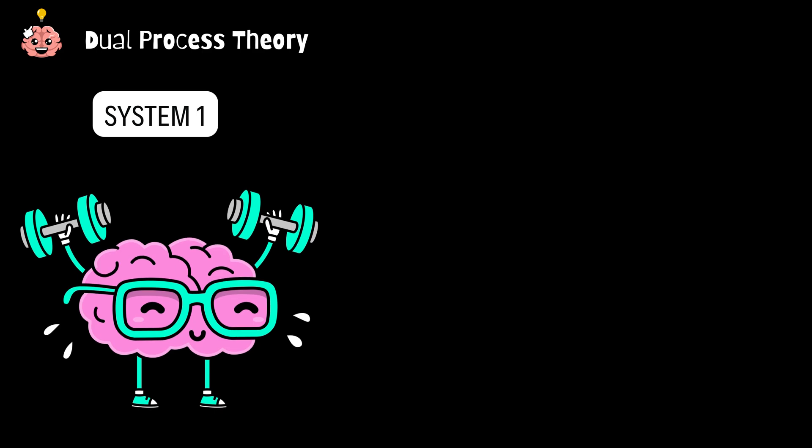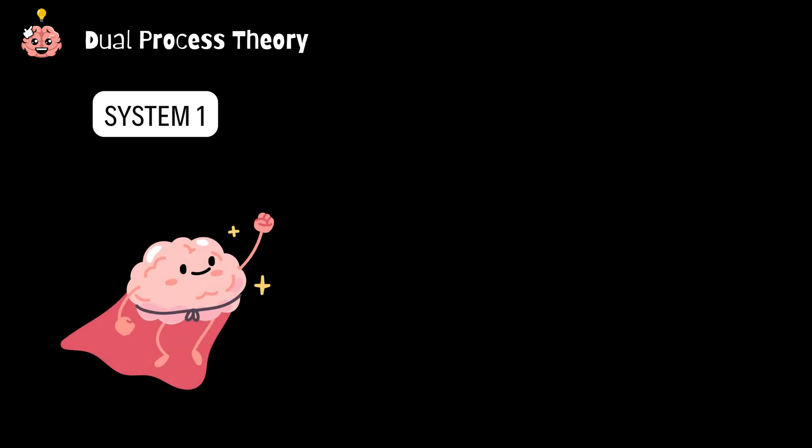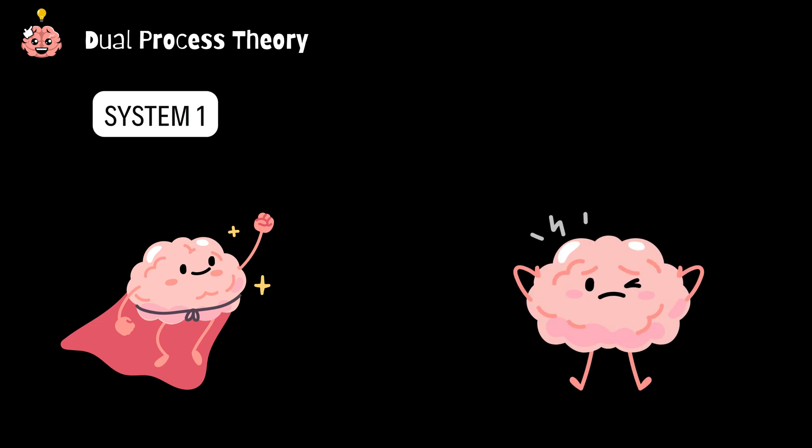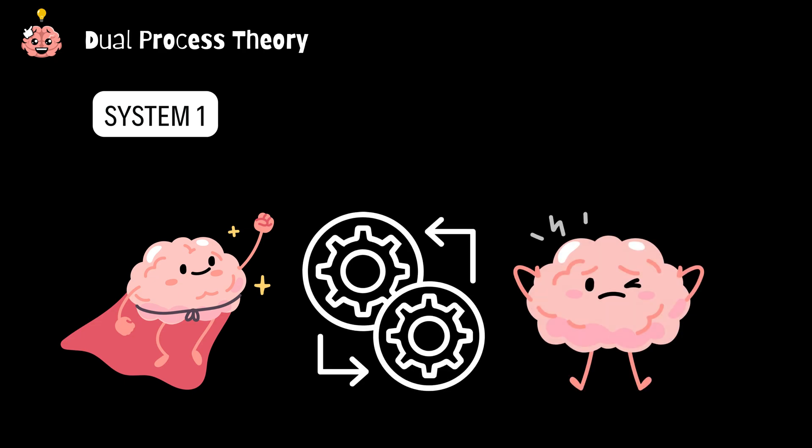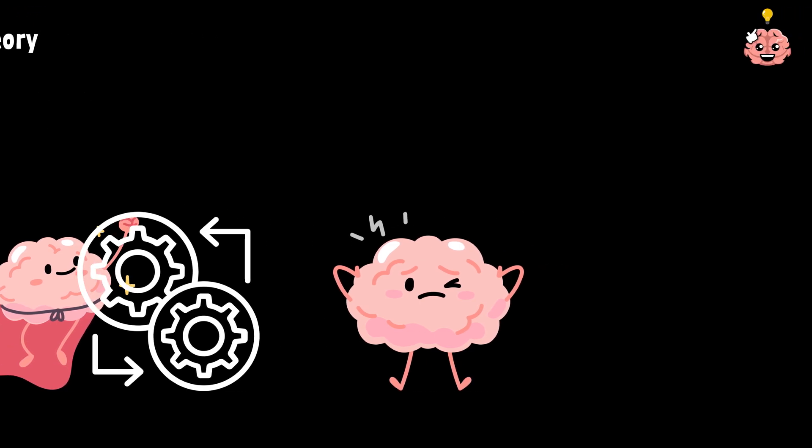But plot twist, sometimes system one can make us too confident. We think we've got the right answer because it came fast, but in reality, we might be way off. That's why knowing when to pause and let system two take over is crucial.